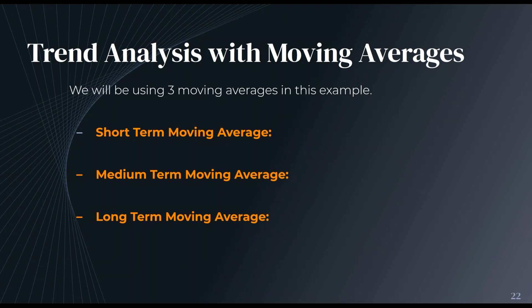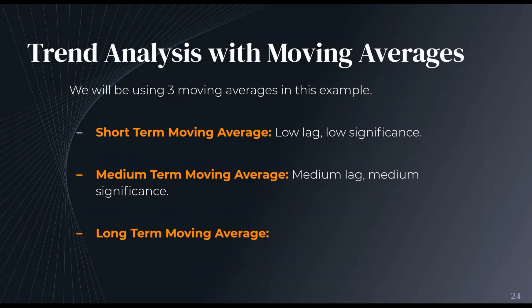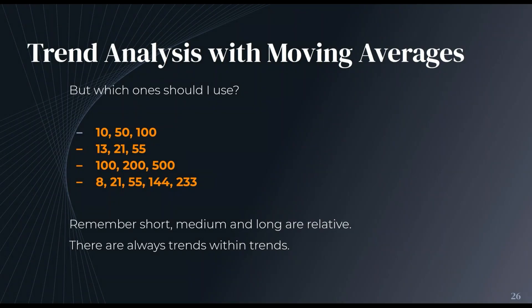Trend analysis with moving averages — this is the heart of the lesson. We're going to be using three moving averages in this example. We'll use a short-term moving average: low lag, low significance. A medium-term moving average: medium lag, medium significance. And as most of you can guess, long-term moving averages will be high lag and high significance. Which ones should you use? I've explained how varying N works, so you should understand it doesn't really matter whether you use the 10, 50 and 100, the 13, 21 and 55 if you like Fibonacci numbers, or 100, 200 and 500.